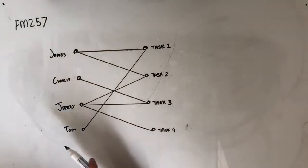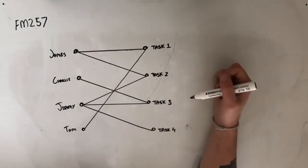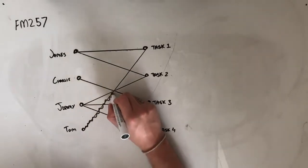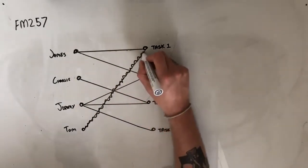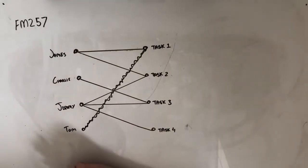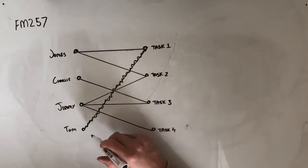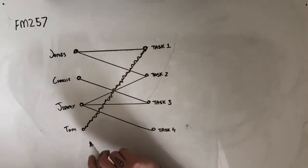So for example, Tom is only able to complete task one. So it makes sense for us to allocate task one to Tom, especially since we're given the information sort of just before the end there. We're told that each person completes a different task. Because task one is the only task that Tom can take part in, that is the one that he will take on.